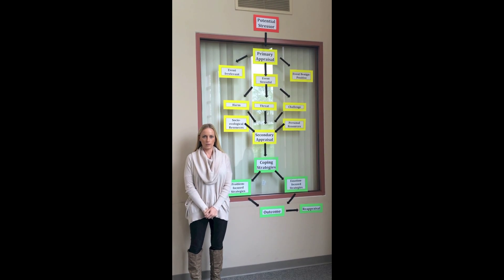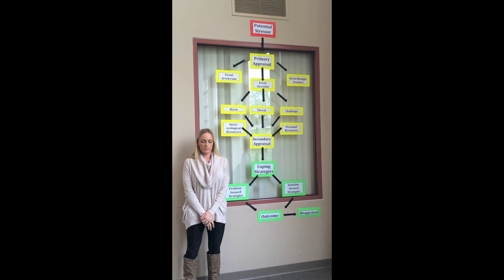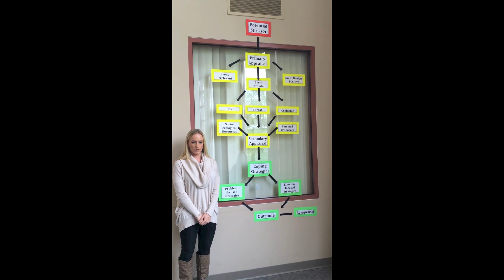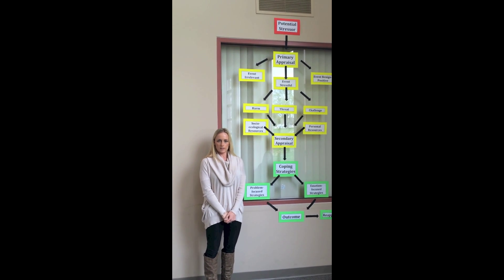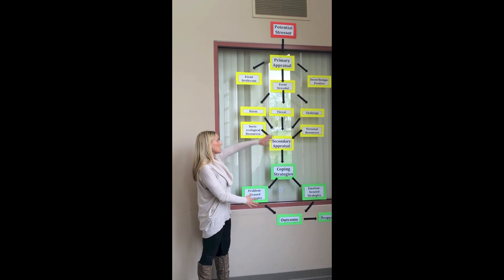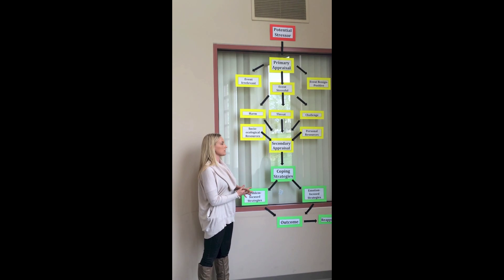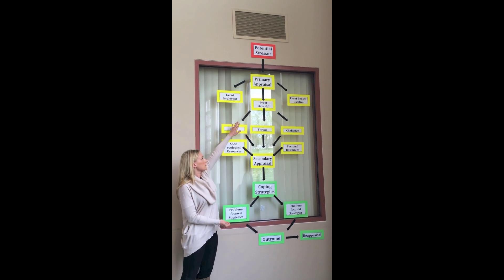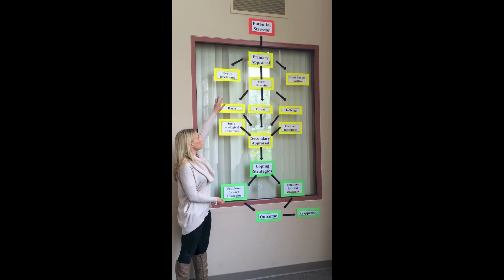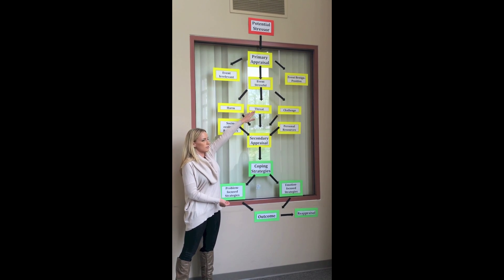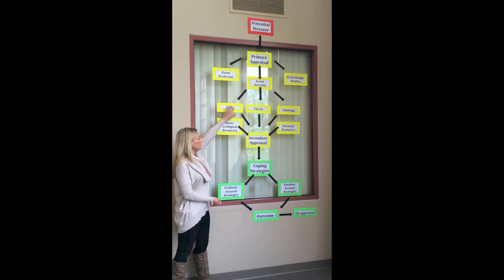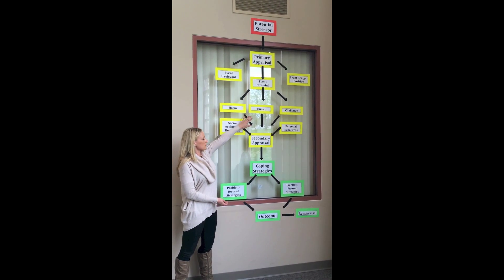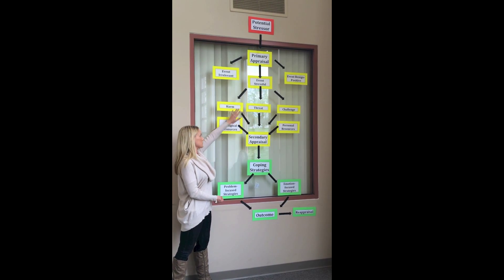The second scenario involves more emotion-focused strategies. Sally just lost her grandmother, whom she was very close with, and she is emotionally distraught — she's tearful, crying a lot, not eating well, and not sleeping much. Going through the Lazarus and Folkman stress coping model: the stressor is the loss of her grandmother. In primary appraisal, Sally appraises this event as stressful — it's clearly not irrelevant because it's causing a strong emotional reaction. She views this as a harm, because it's not a threat to physical well-being and not really a challenge she can overcome, as it's something that has already happened.